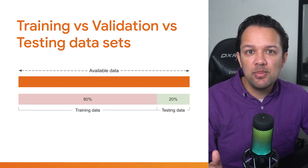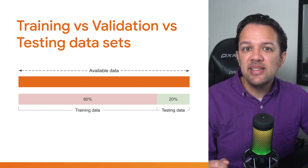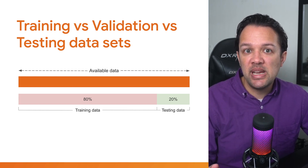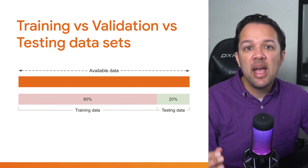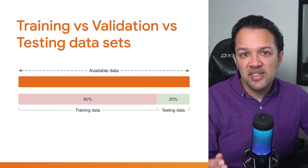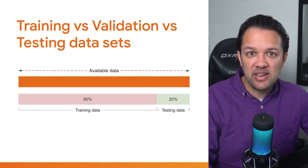When looking at real-world examples, you may see engineers reserve 80% of the available data for training the model, and 20% is set aside for testing it once trained.